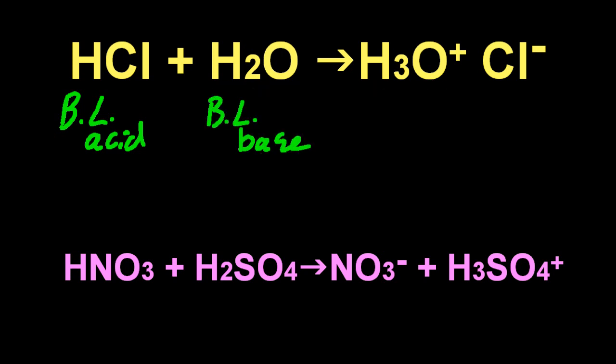In the example below, they're both acids, nitric and sulfuric acid. But notice the sulfuric acid is receiving a proton, so that's the Bronsted-Lowry base.